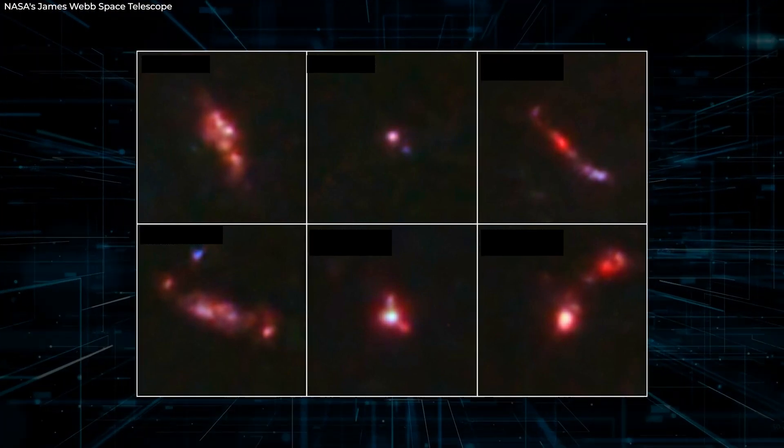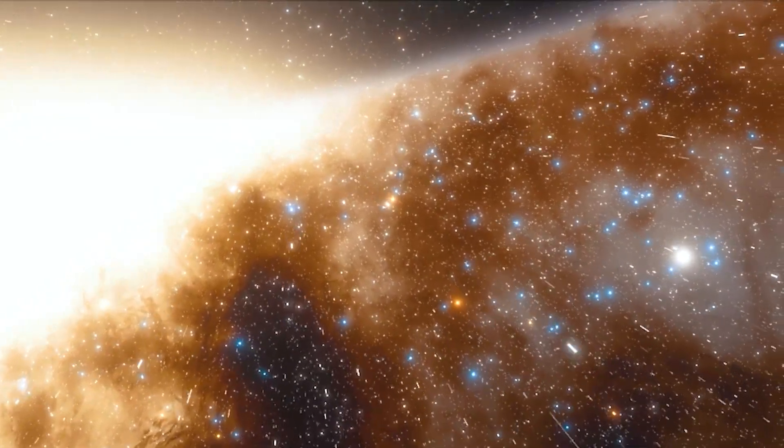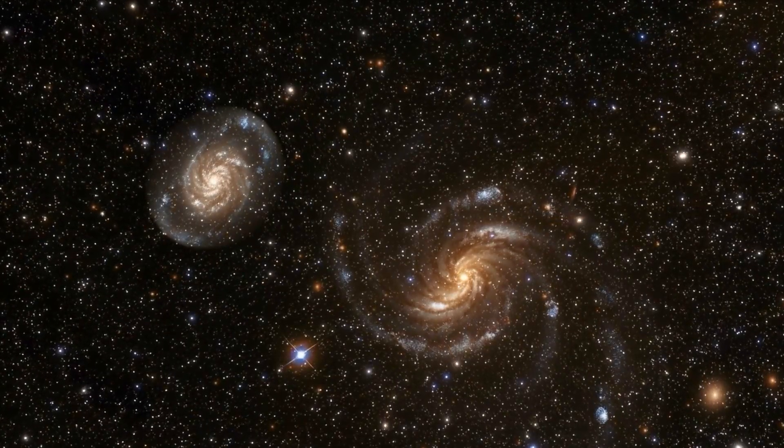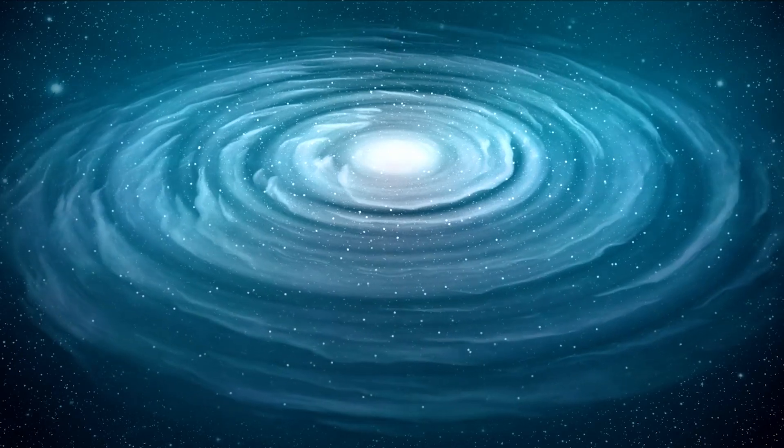In Webb's near-infrared image, we can see structures in every individual galaxy that the James Webb Space Telescope has detected. These galaxies are clumpy and frequently elongated, giving them a more chaotic appearance than those in the neighboring universe.